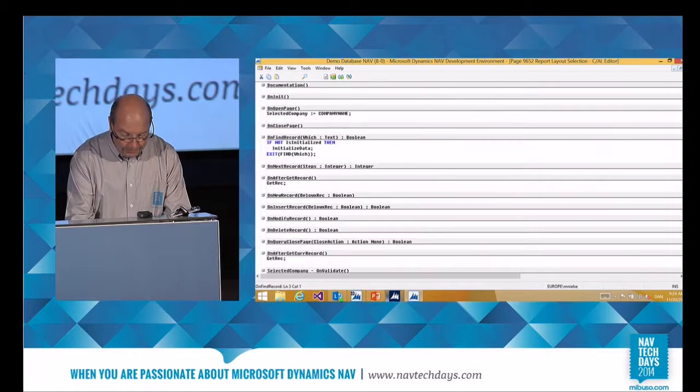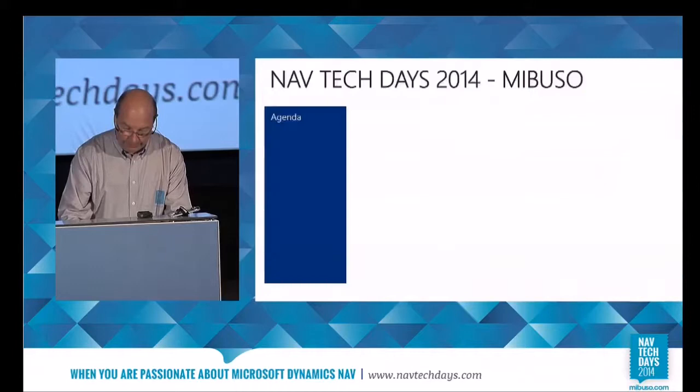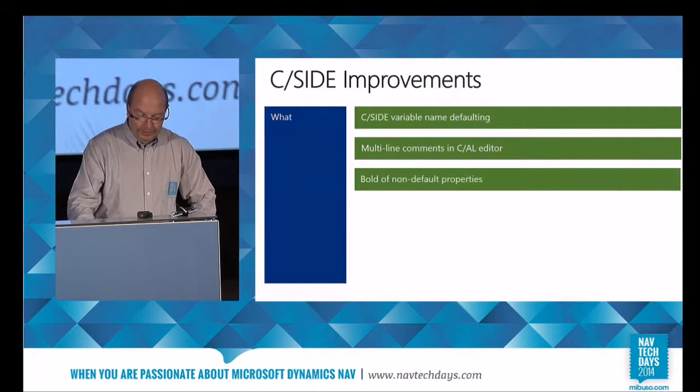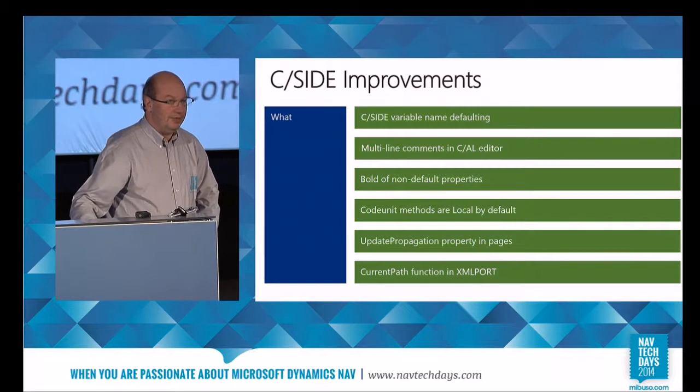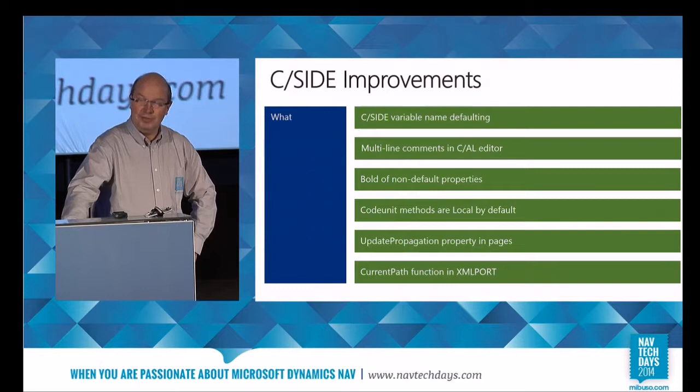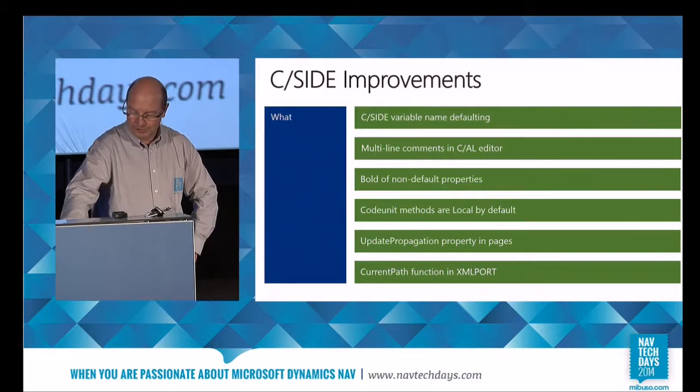But that's not all. Beyond that, we actually started using XMLport internally for real production code. One annoying thing is that you sometimes need the XPath in there. Of course, you can create that yourself using C/AL, but now there's a function to get that at your hands to write your code.